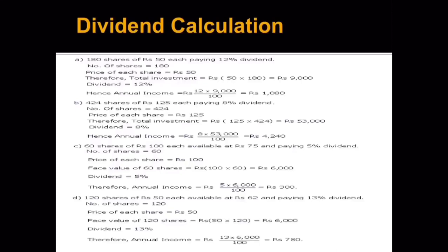Now let us understand how to calculate dividend. In the first case: 180 shares of rupees 50 each paying 12 percent dividend. Taking rupees 50 as face value, applying the formula: 12 upon 100 into 50 into 180, which gives rupees 1080 as dividend. In the second case: 424 shares available at rupees 125 giving 8 percent dividend. So 8 upon 100 into 125 into 424 gives rupees 4240.